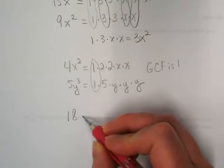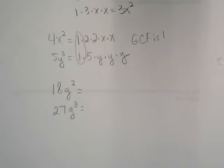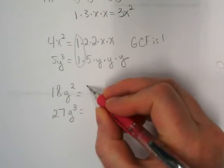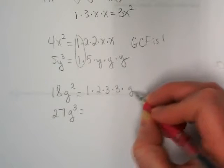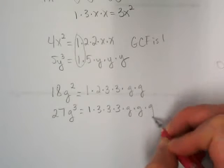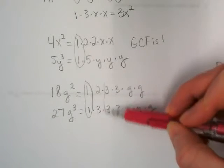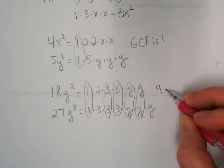I'm going to give you a different one. How about 18G squared and 27G to the third? You guys ready to compare? Here's what mine looks like laid out. What do I have in common? I have my ones, I have two threes, and two Gs. So, this times this times this are going to give me 9G squared.